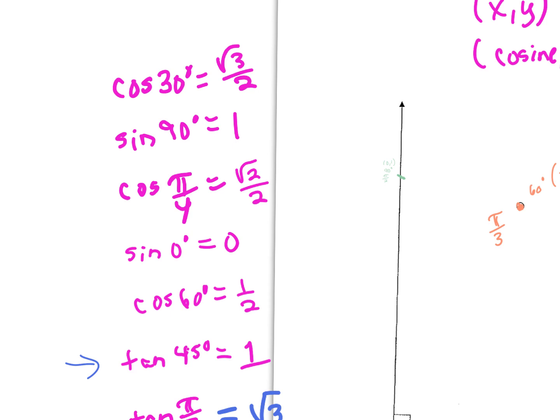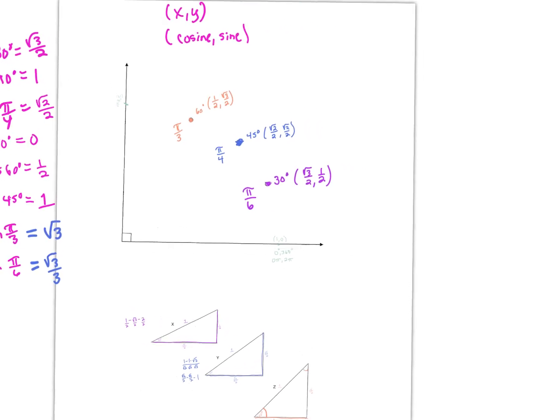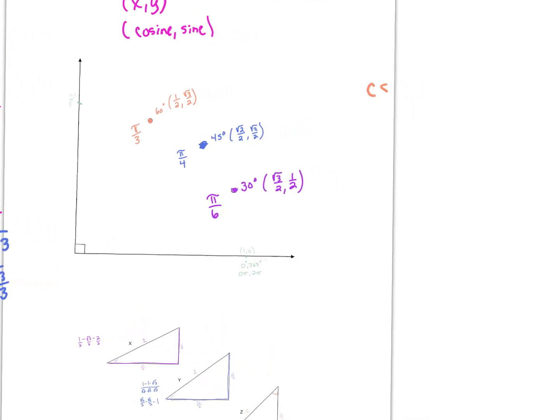Let's look at reciprocal functions. Cosecant of 60 degrees: cosecant is the reciprocal of sine, so we look at the y-coordinate and flip it. At 60 degrees, y is √3/2, so flipping gives 2/√3. Rationalizing gives 2√3/3. For secant of 45 degrees: secant is the reciprocal of cosine, so we look at the x-coordinate and flip it. The x at 45° is √2/2, flipping gives 2/√2, and rationalizing gives √2.